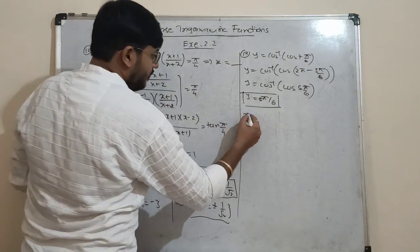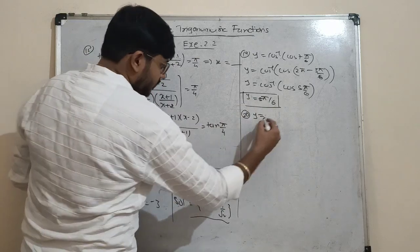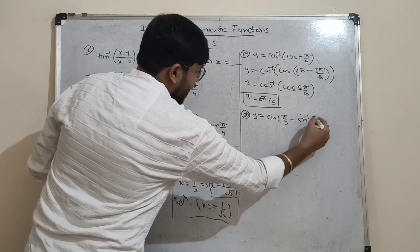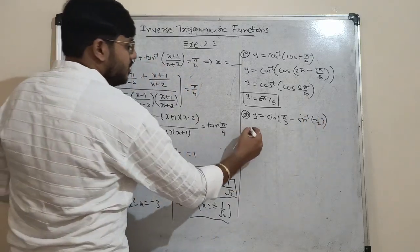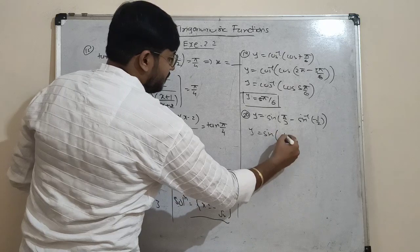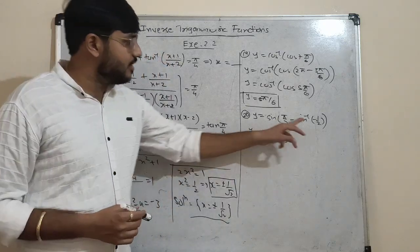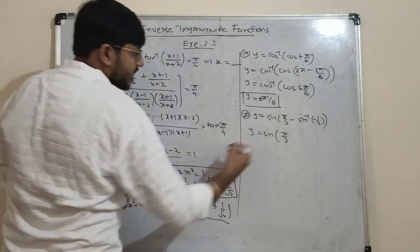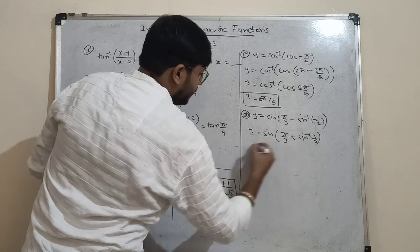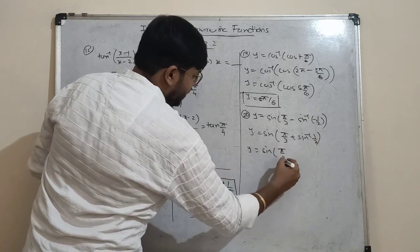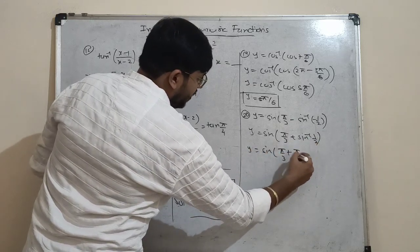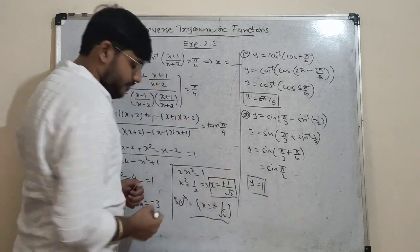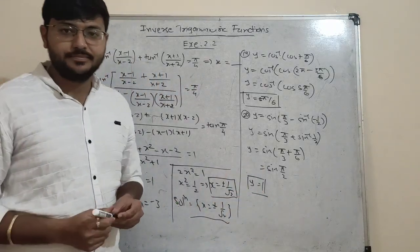Number 20: y = sin(π/3 - sin⁻¹(-½)). Take the minus sign outside: y = sin(π/3 + sin⁻¹(½)). sin⁻¹(½) = π/6, so y = sin(π/3 + π/6) = sin(π/2) = 1.